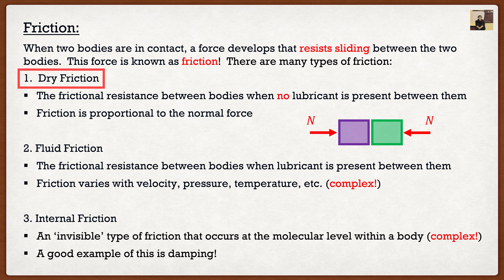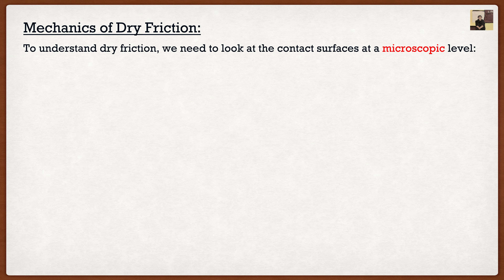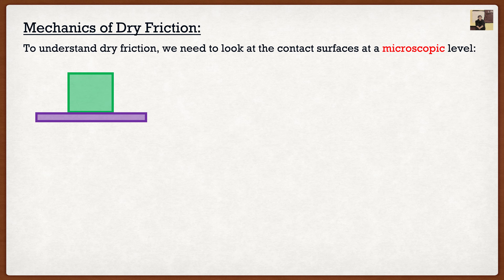So, mechanics of dry friction. To understand it, we have to look at the surface at a microscopic level. If I were to have a box on top of a surface and try to push that box, it's fairly intuitive that there's going to be a frictional force counteracting that motion — acting in the opposite direction of how I'm trying to push the box.